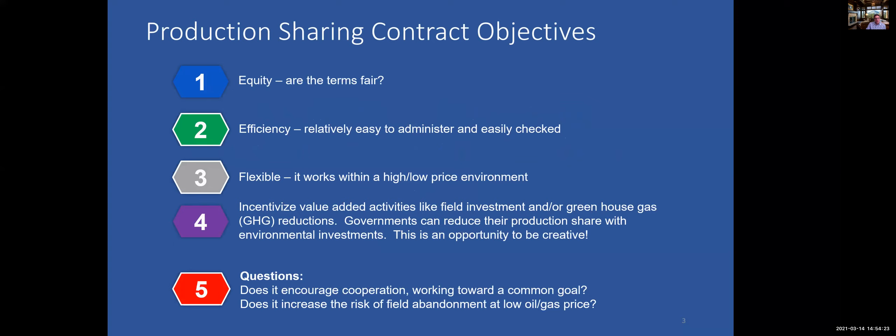Production sharing contracts — the main objectives: they need to be equitable, things need to be fair, efficient, easily administered and easily checked, flexible. It works in both high and low price environments, and there is a great opportunity to incentivize field development or greenhouse gas reductions. You can make the royalty, profit, or production sharing go down once greenhouse gas targets are met.